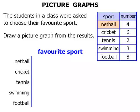Let's start with netball. There were four people who chose netball. So we're drawing a picture graph — to represent four, we draw one, two, three, four smiley faces.